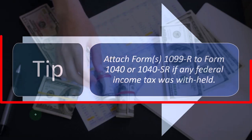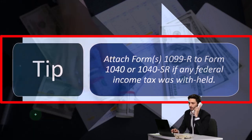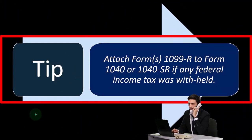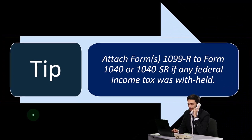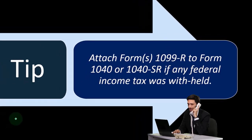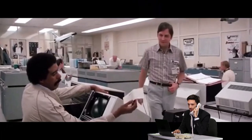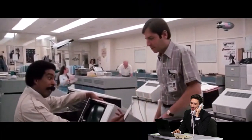Attach Forms 1099-R to Form 1040 or 1040-SR — the 1040-SR being for those in their retirement years. If any federal income tax, state tax, or Social Security tax was withheld, that should be noted.